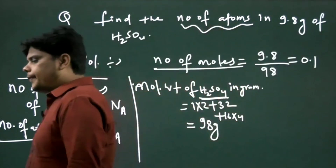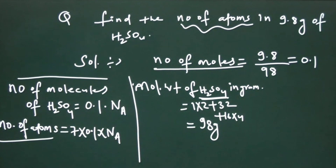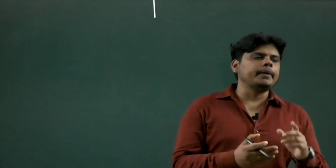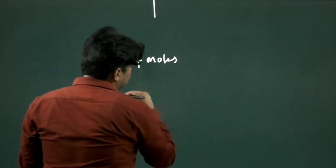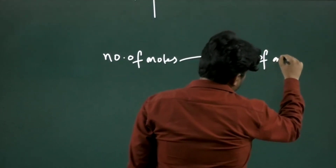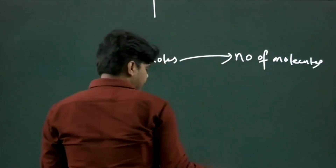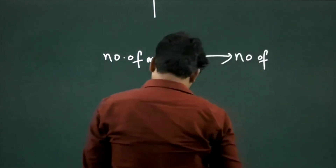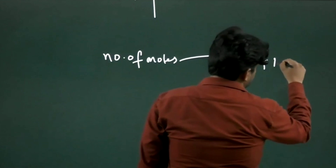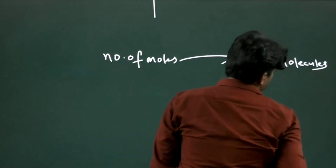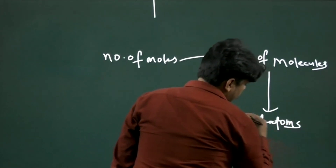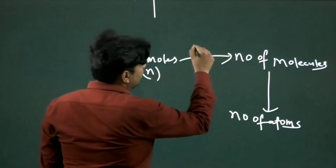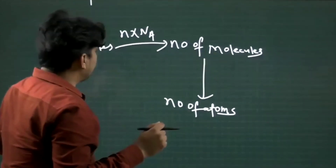Just write this down. We must observe the link between moles, molecules, and atoms. The flowchart is: from moles you can easily calculate number of molecules, and after getting number of molecules you can easily calculate number of atoms. If number of moles is n, number of molecules = n × Nₐ, and number of atoms = n × Nₐ × (atoms per molecule).